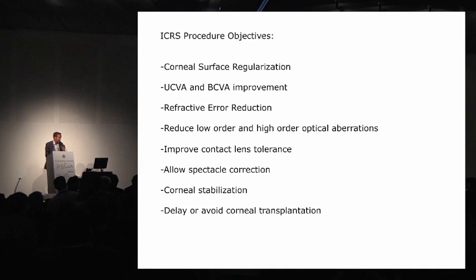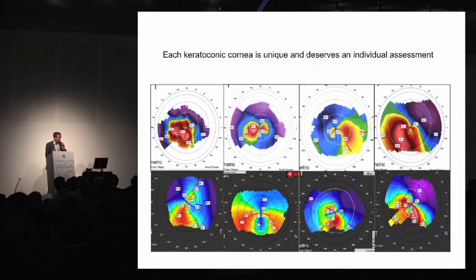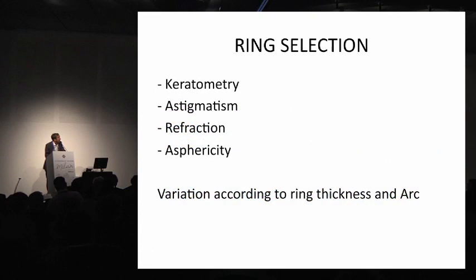You all know the objective of ICRS implantation. It's first of all to regularize the surface, to improve best corrected visual acuity, to reduce the refractive error, to reduce the low and higher-order optical aberrations, improve contact lens tolerance, allow spectacle correction, stabilize the cornea — even if we see some cases of evolution of ectasia after ring implantation — and delay or avoid transplantation. Of course, as we have seen in the previous presentation, each cornea is unique and deserves an individual assessment.